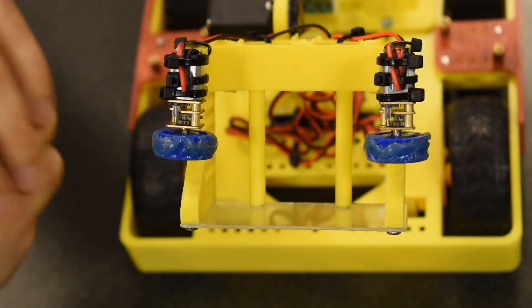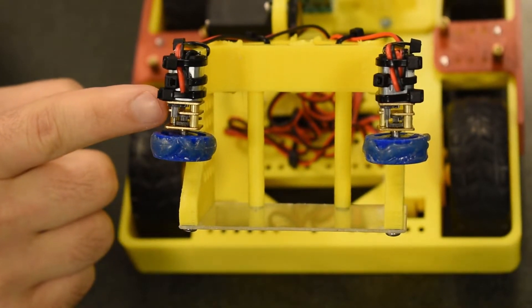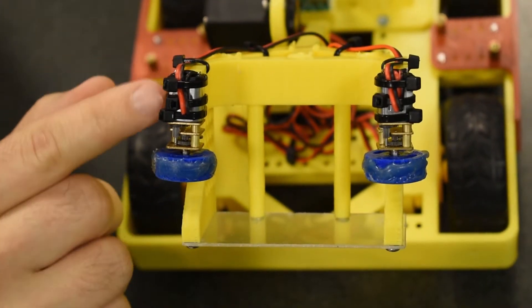For the intake that picks up balls, I'm using these tiny gear motors that have an exposed gearbox. So you can see the little gears in there and how they reduce the speed coming out of the motor itself up here.